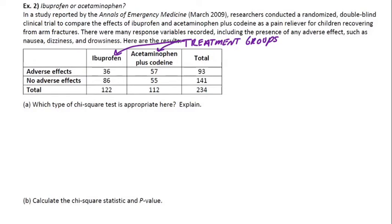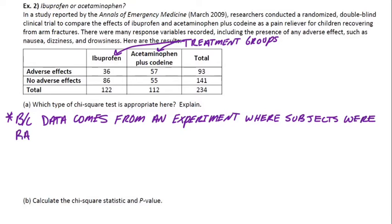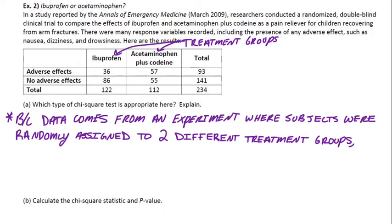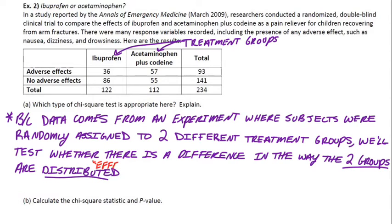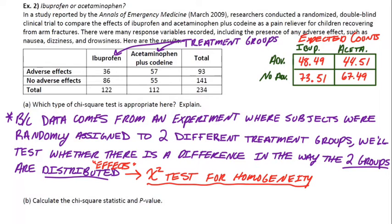Part A asks: which type of chi-square test is appropriate here? It's definitely not goodness of fit because this isn't a one-way table. This is either homogeneity or independence. Because the data comes from an experiment where subjects were randomly assigned to two different treatment groups, we'll test whether there's a difference in the way the two groups are distributed, which means we're going to test for homogeneity. We want to see if the effects are distributed the same for the ibuprofen group as for the other group.